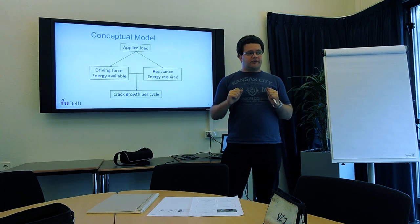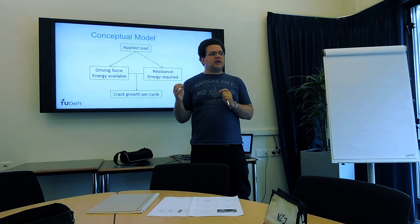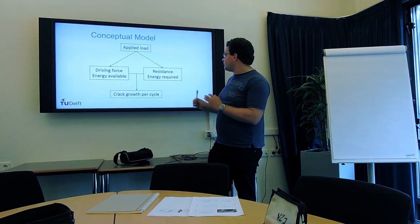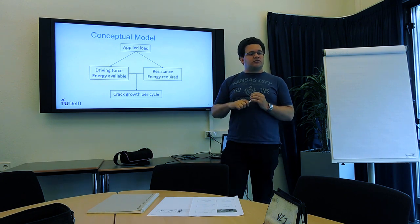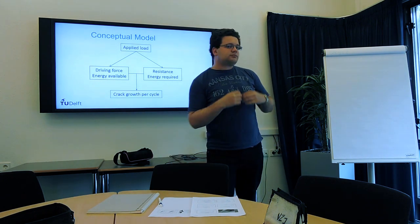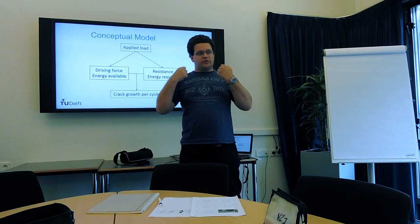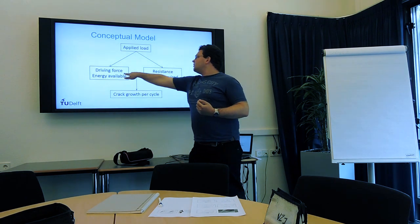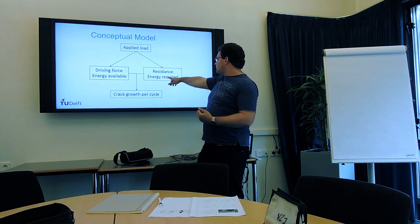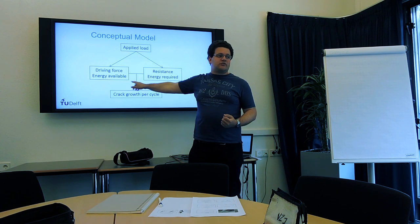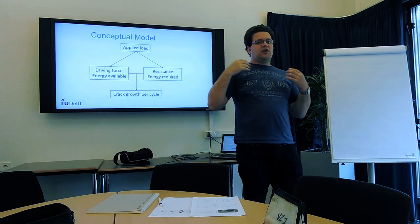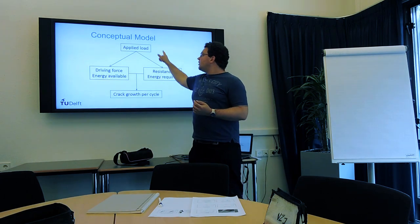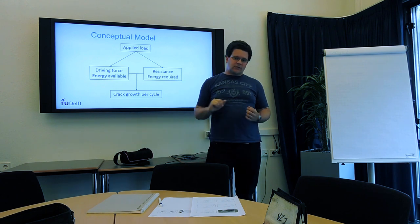Well, we can start with Griffith. Griffith said, to grow a crack, we need to provide a certain amount of energy. There's a certain amount of energy required per unit of crack growth. And of course, when we apply a load to a specimen, we are putting energy into that specimen. So there's a certain amount of energy available. And then the combination of the available energy and the required energy gives us the crack growth per cycle. And now both available and the required energy, and I'll show some evidence for that in a minute, both depend on the applied load.